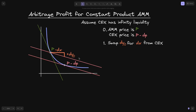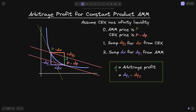First, the arbitrager will sell DY0 amount of token Y to the centralized exchange and get back DX amount of token X. Next, taking the DX amount of token X from the centralized exchange, he will sell this amount to the AMM — put in DX amount of token X and get back DY1 amount of token Y. The difference between DY1 and DY0 is the profit, which I've highlighted in green. A equals DY1 minus DY0.